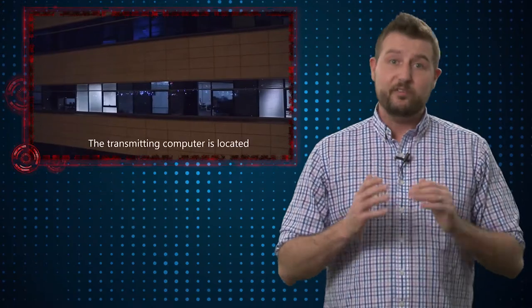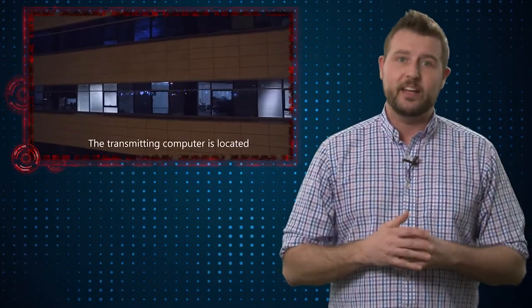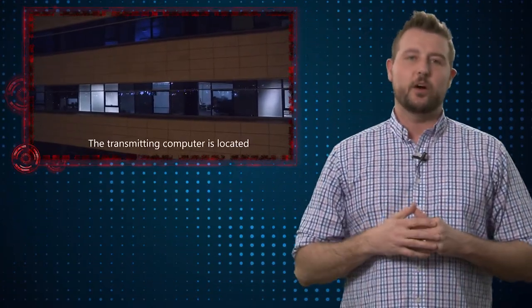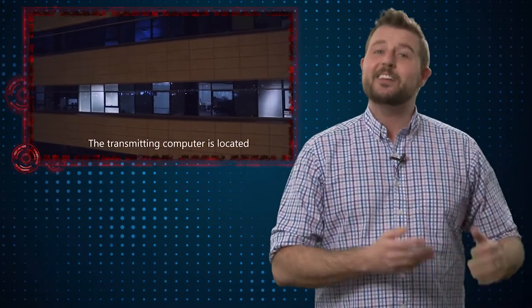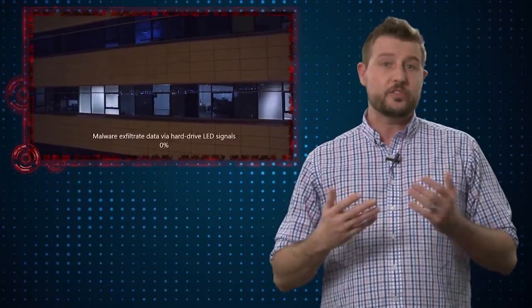The hard drive light can actually blink so quickly that you can't see it. According to them, you can actually send 4,000 bytes per second using that little blinky light on the hard drive, which by the way is still not a ton of data, but it's enough to send things like passwords or digital certificates and keys.